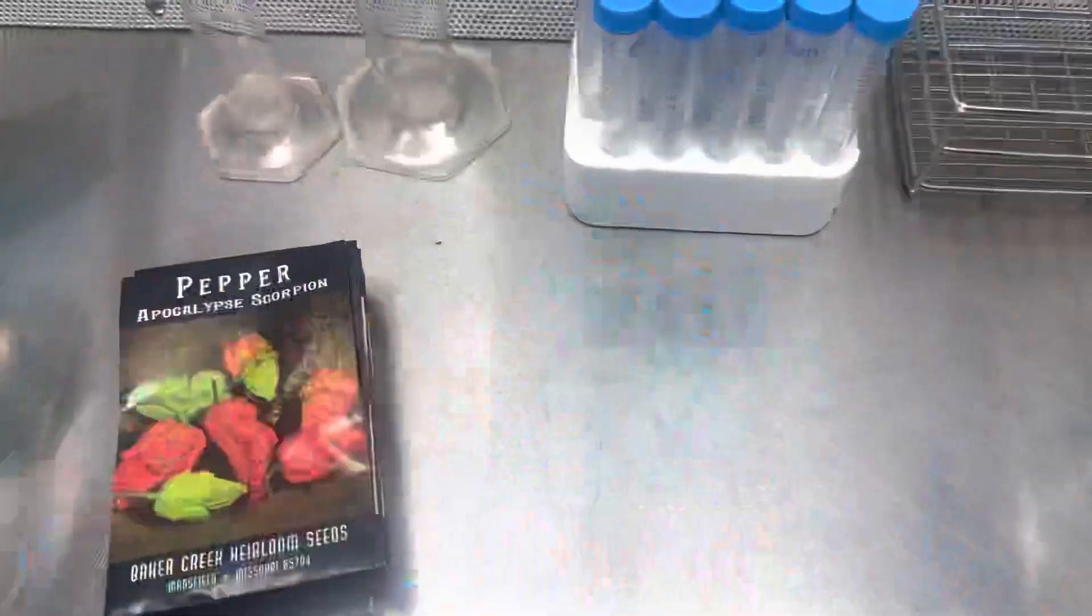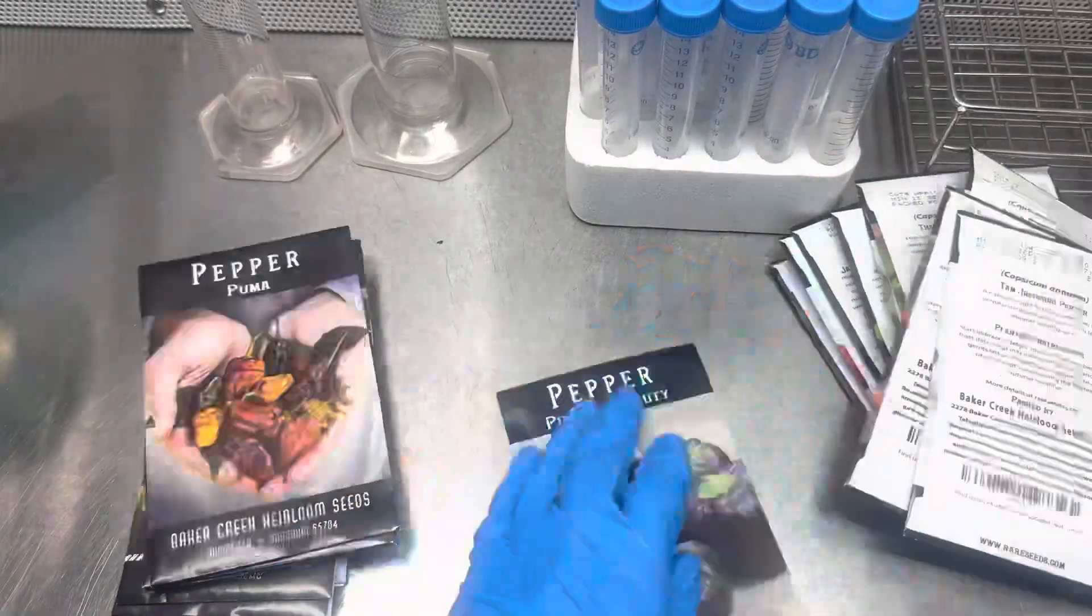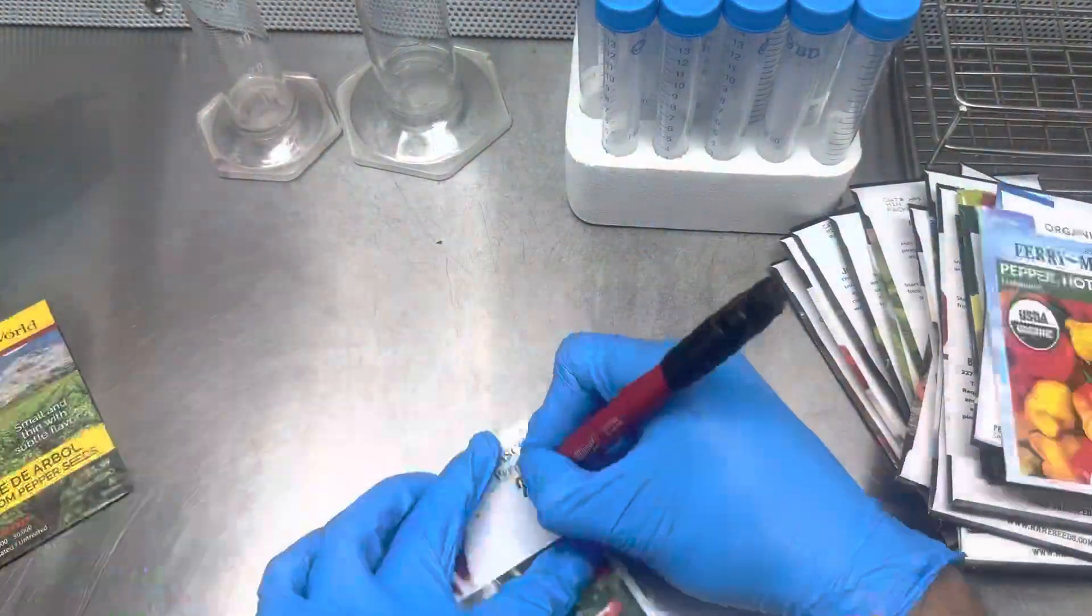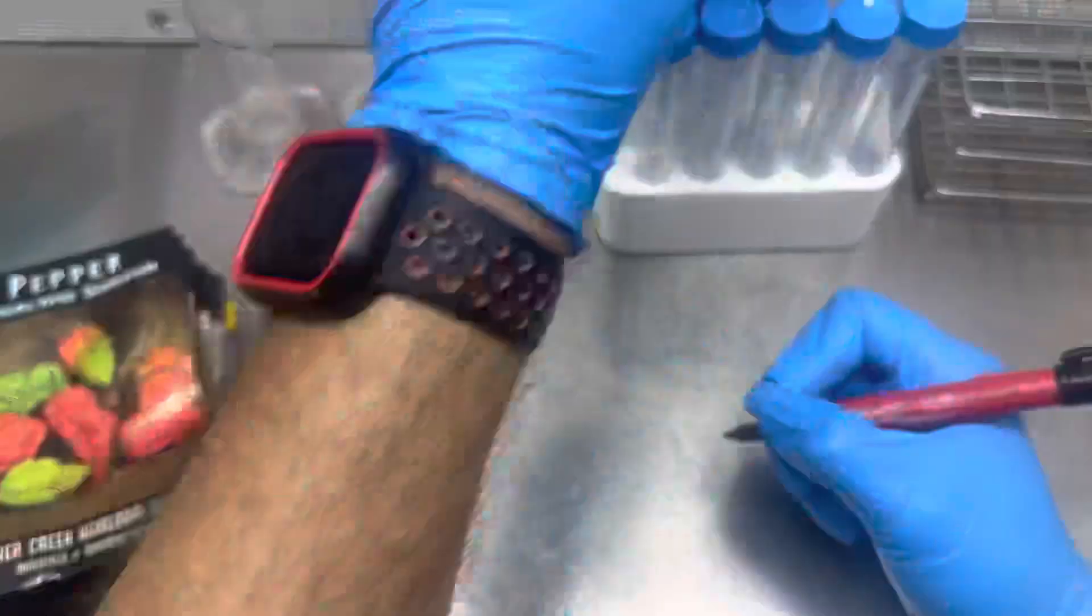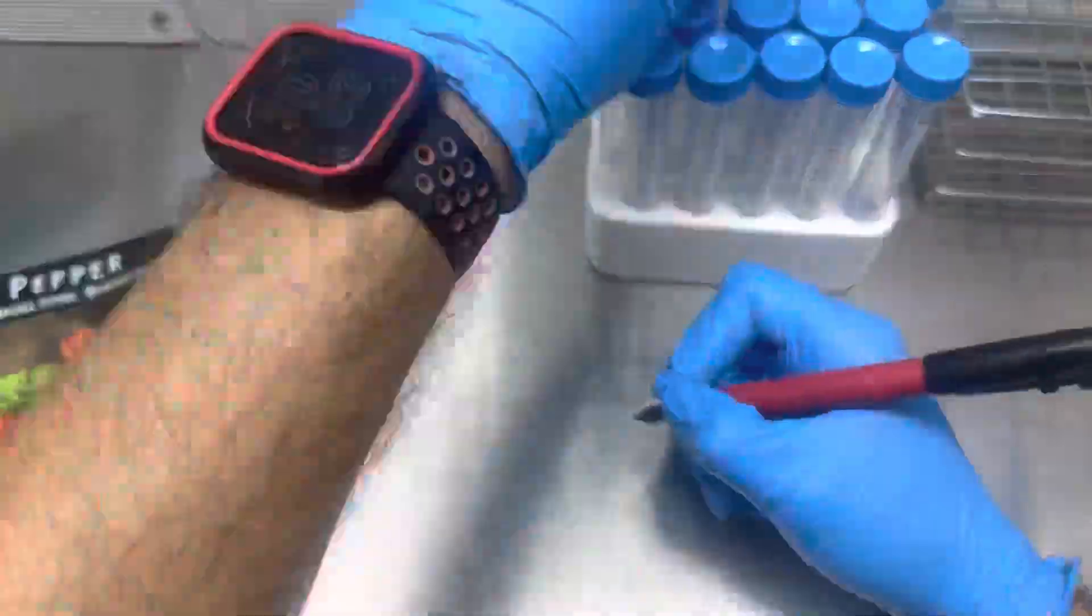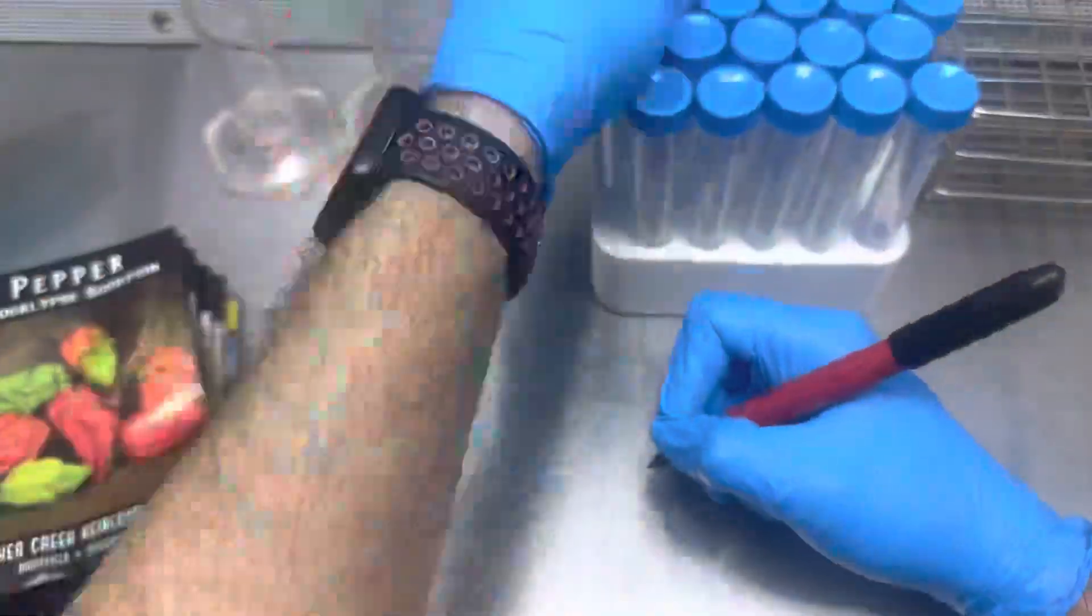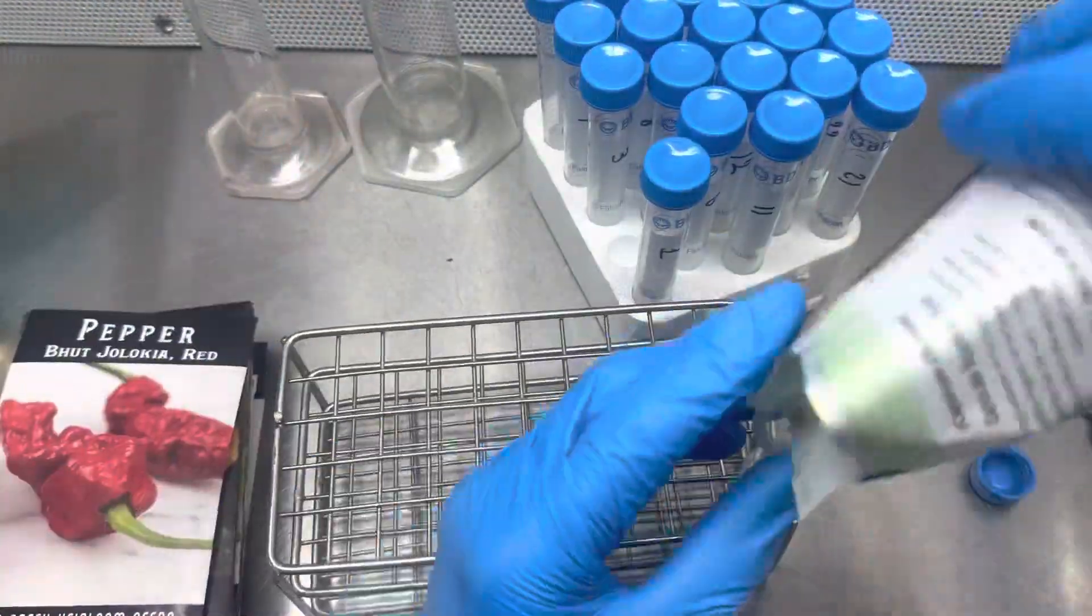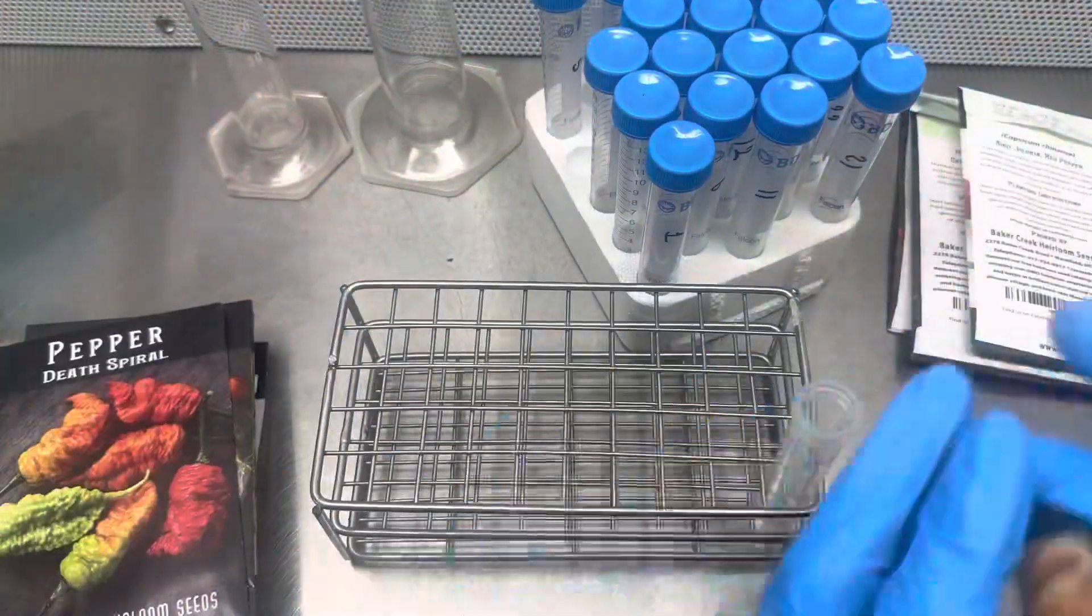Hello everyone, welcome back to another video. Today I will show you how to germinate old seeds using hydrogen peroxide. First I need to get my seeds ready. Yes, these are not old seeds, but this process works very well with old seeds and new seeds. These seeds will sprout in less than 24 hours.